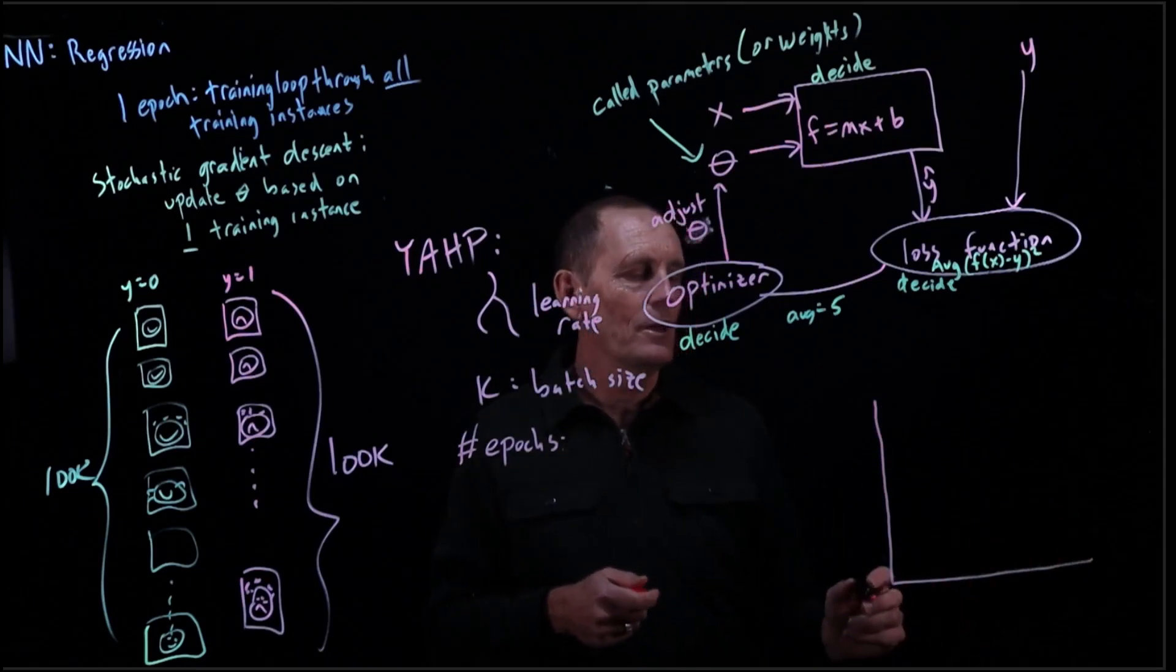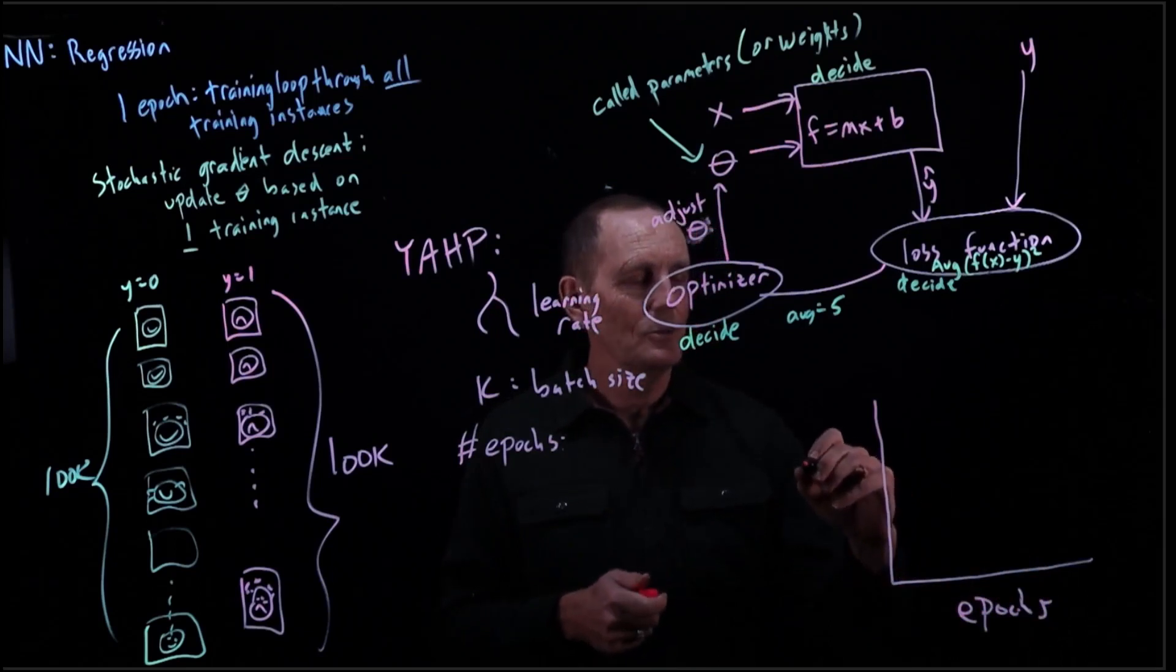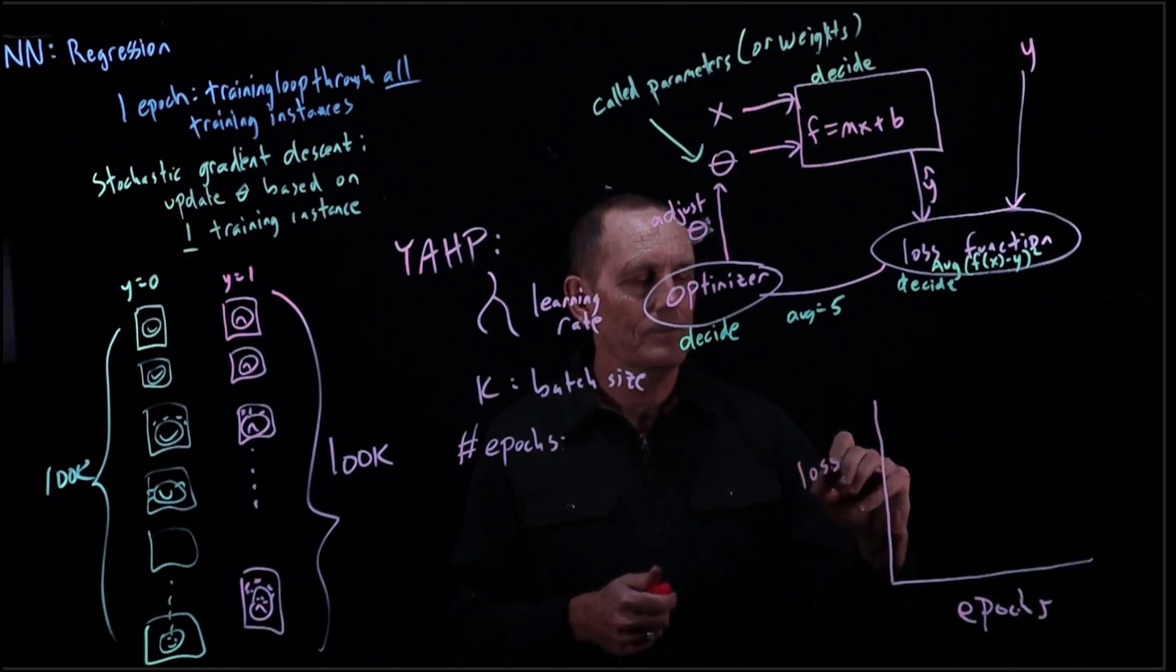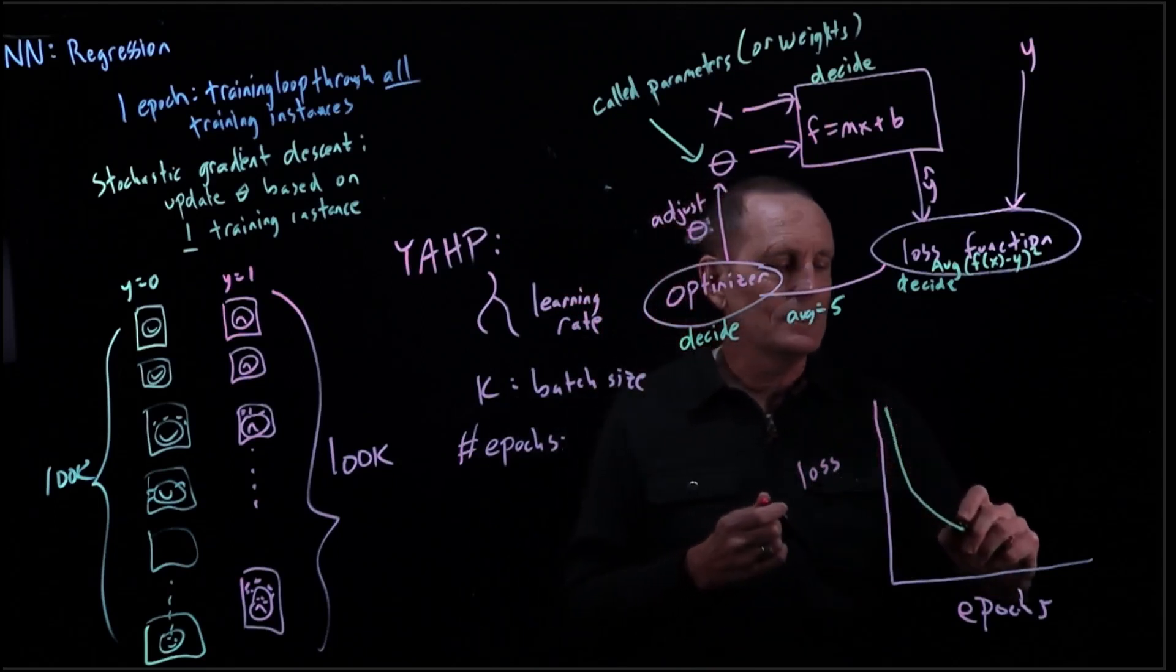So you'll remember that we saw if we look at epochs and we look at loss, that we had a training loss tends to go down.